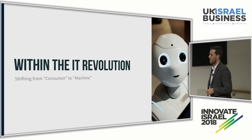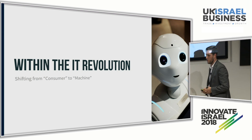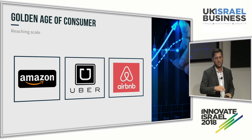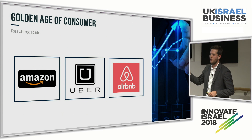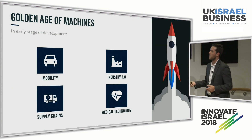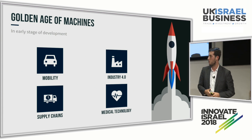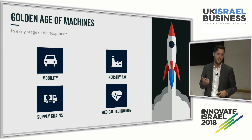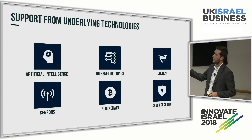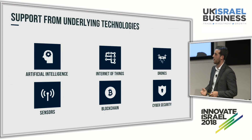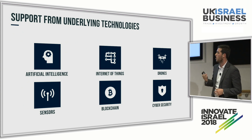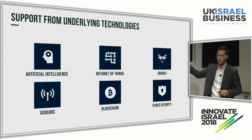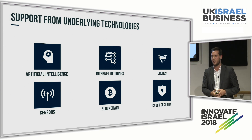Within the IT revolution, we're seeing a very interesting trend where we're shifting from a consumer-oriented technology — where some of these big consumer-facing technologies like Airbnb, Uber, and Amazon are reaching a level of scale — and moving to a technology that's focused on machines. We're seeing the emergence of sectors specifically in mobility, Industry 4.0, and medical technologies, where machines are taking center stage of innovation. This innovation is supported by new underlying technologies such as artificial intelligence, Internet of Things, drones, sensors, blockchain, and cybersecurity, and we're going to see a lot of innovations relate to these core technologies, mostly focused on developing machine capabilities.